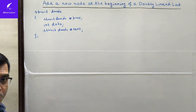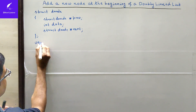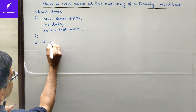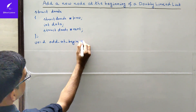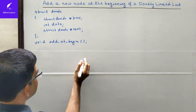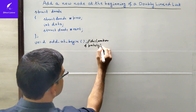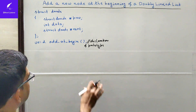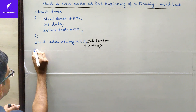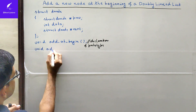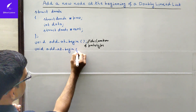After declaring the structure, we have to declare the prototype of the function we are going to define. The return type of the function is void, the name of the function is add_at_begin, and it is not accepting any parameter. So this is the prototype declaration.